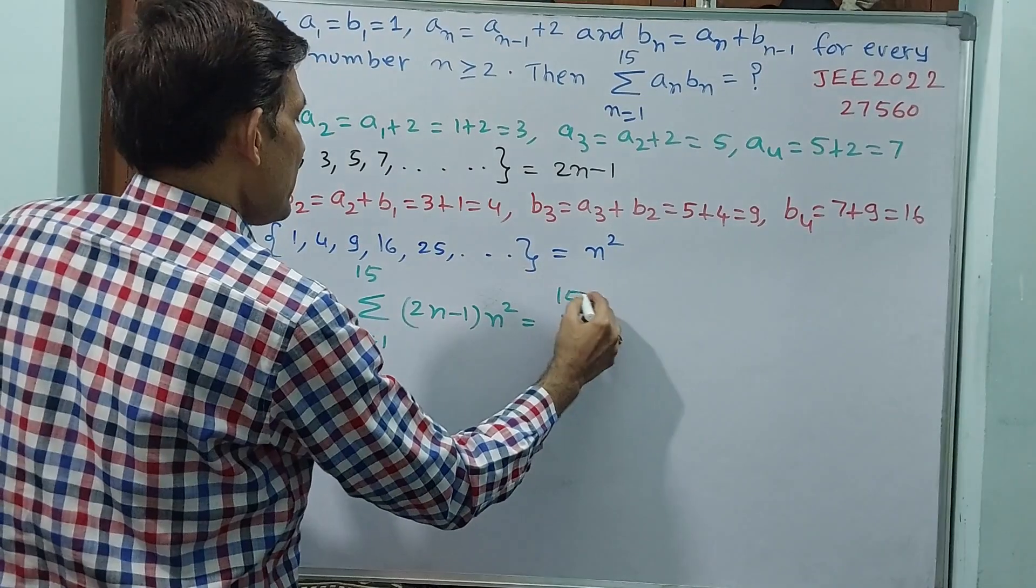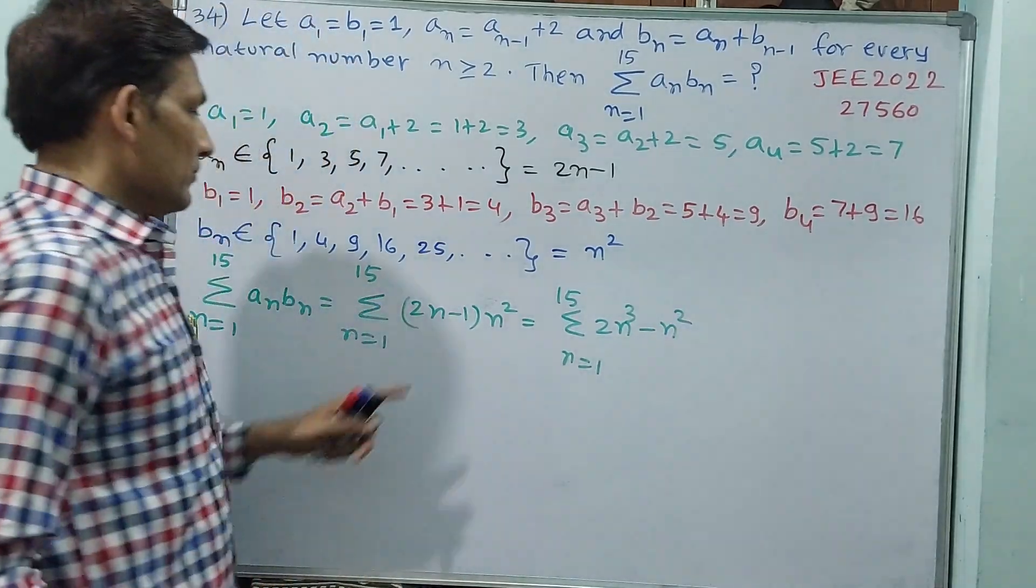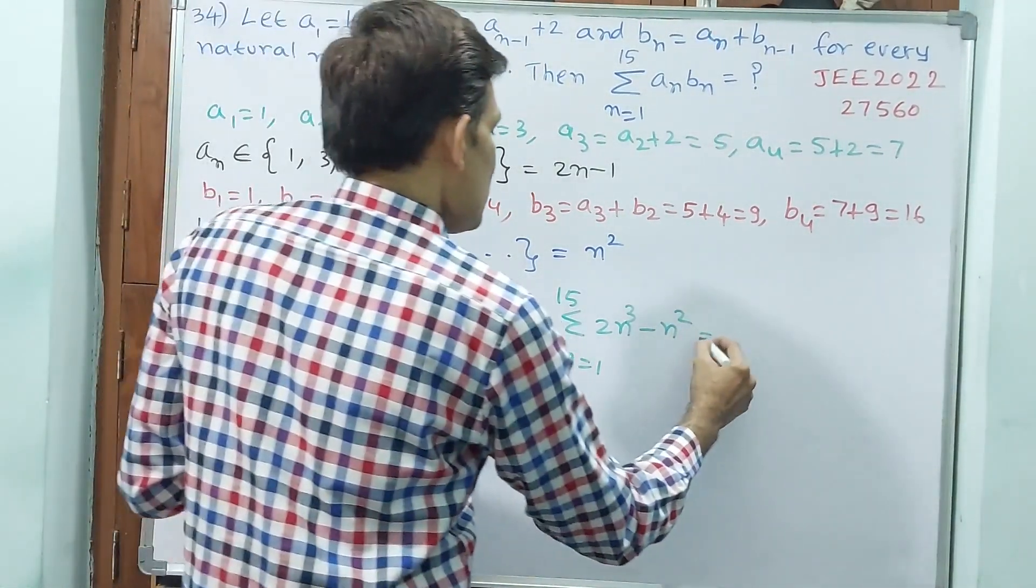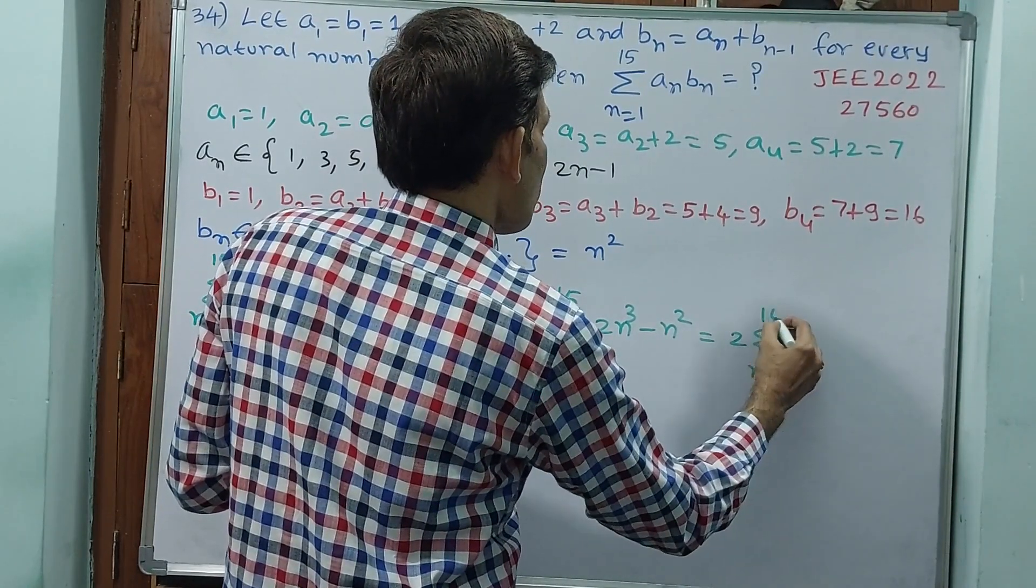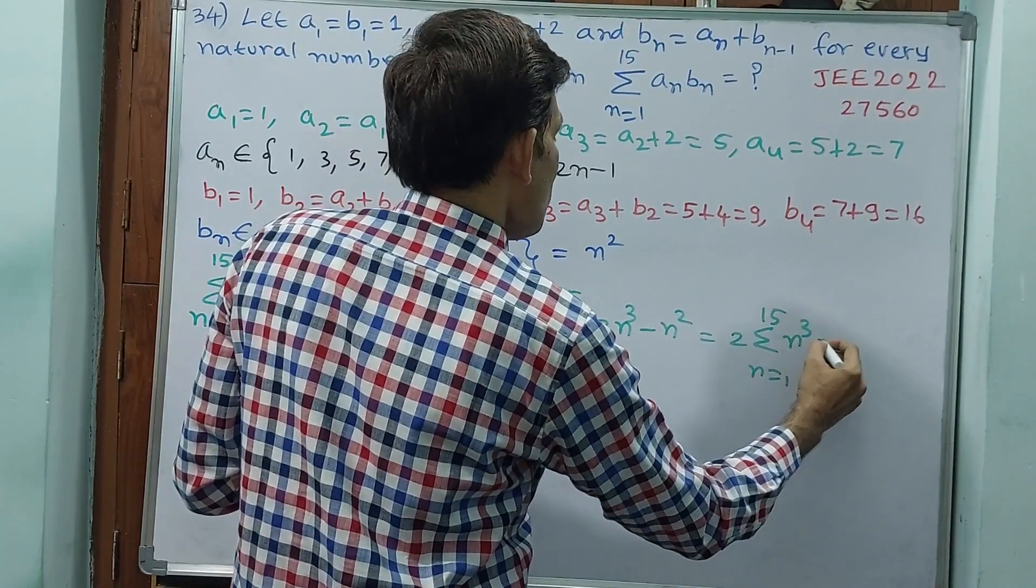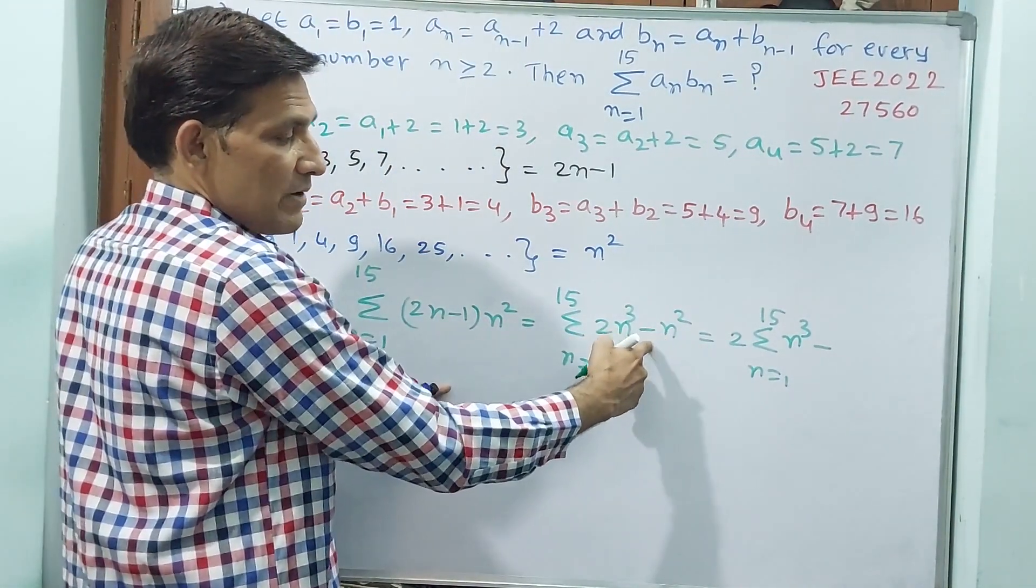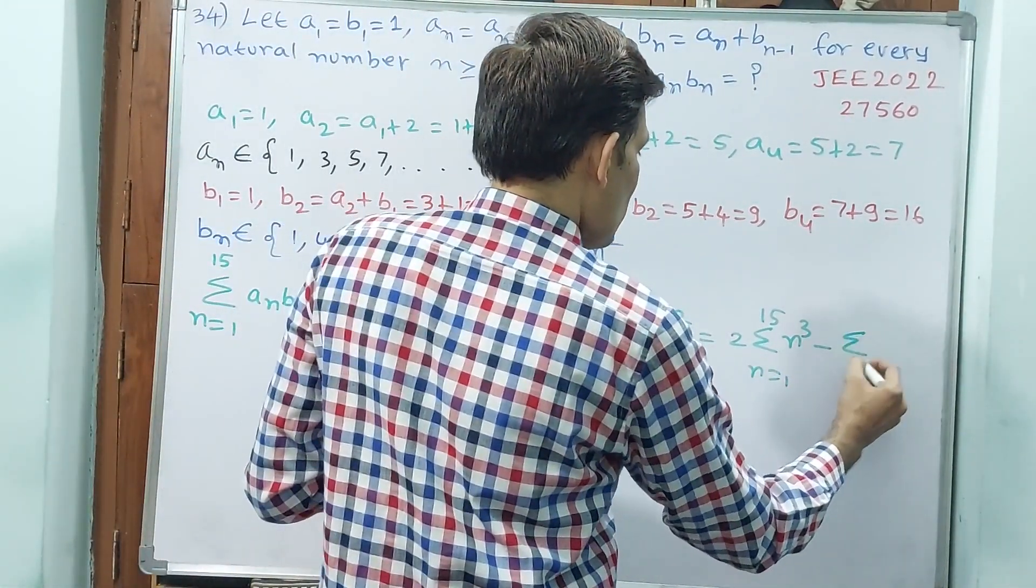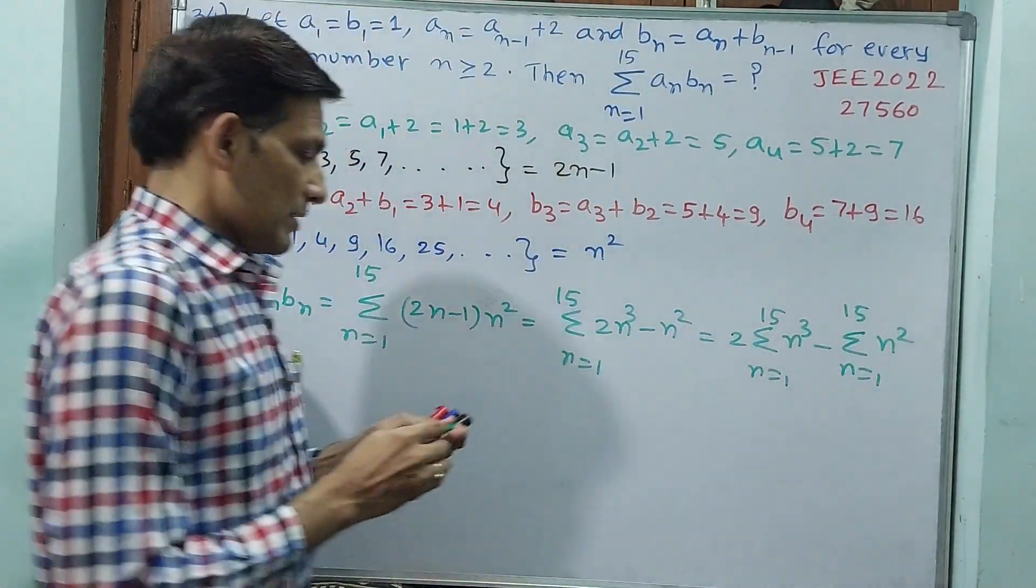That is equal to sigma n is equal to, sigma n is equal to 1 to 15, 2n cube minus sigma n is equal to 1 to 15, n square. 2 is for only n cube, not for n square.